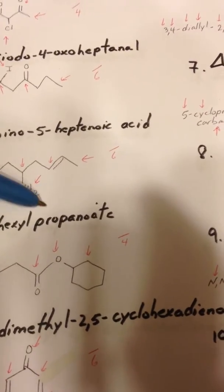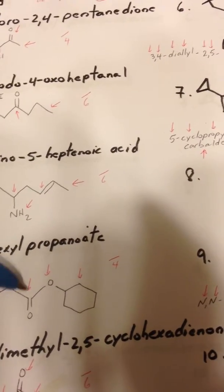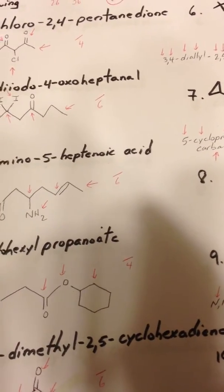And the cyclohexylpropanoate, here's the cyclohexyl part. It's attached to the oxygen atom of the carbonyl, and the chain is 1, 2, 3 carbons long.